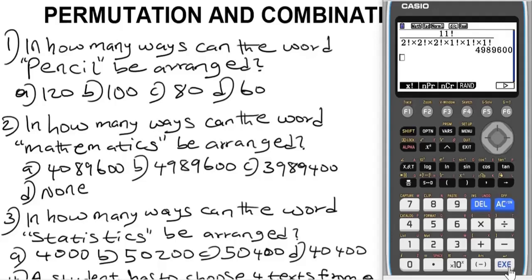That is how many ways the word mathematics can be arranged — 4,989,600 ways, which is option B. And the answer for question 1 was option A.